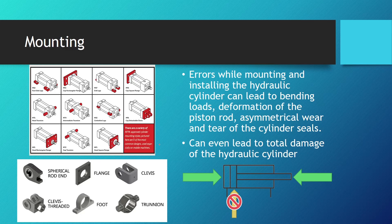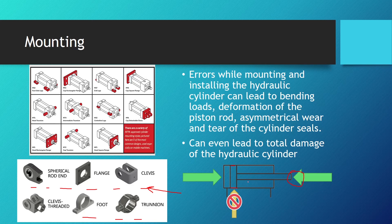Errors while installing the cylinder and errors while choosing the rod end connector types can lead to unwanted bending loads. If we don't choose the right rod end connector and don't install it correctly, that can lead to bending loads which can cause the piston rod to deform, asymmetrical wear and tear on the piston seals — which are responsible for keeping the pressurized work fluid contained — reducing efficiency significantly. Sometimes those bending loads can cause irreversible damage to the hydraulic cylinder.